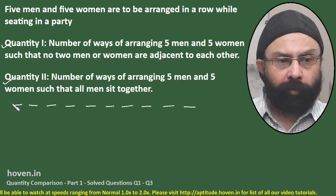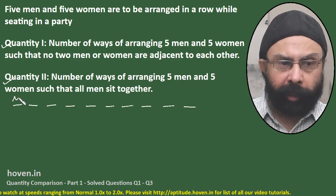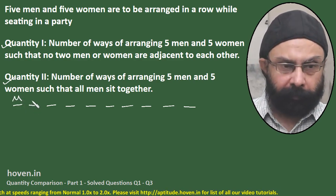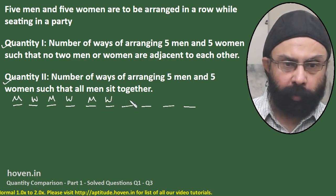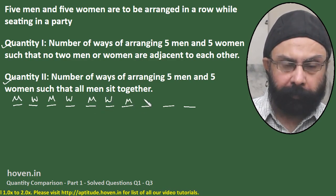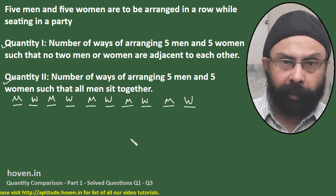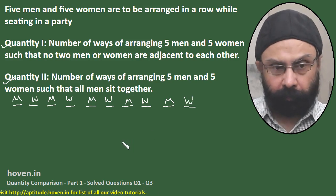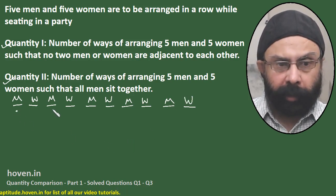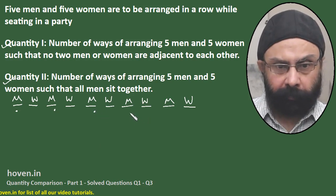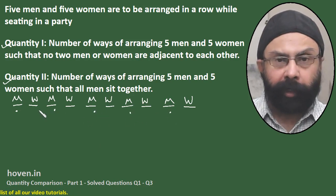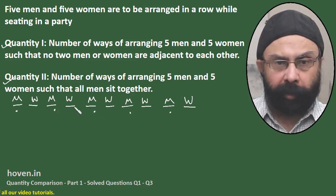In one arrangement we could start with a man, then woman, then man, then woman, and so on — M, W, M, W, M, W, M, W, M, W — where men come in alternate positions and women come in between.